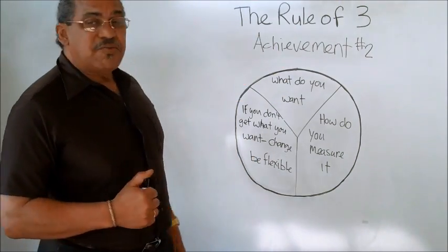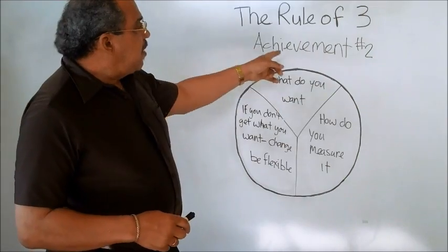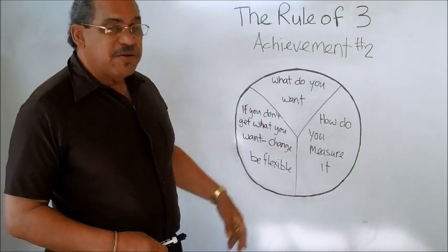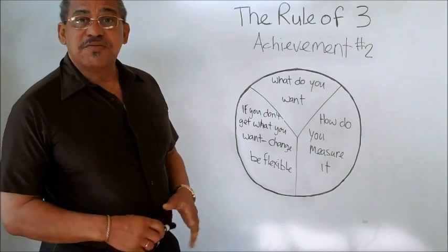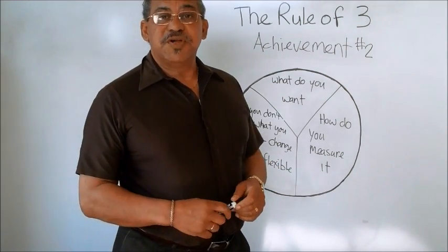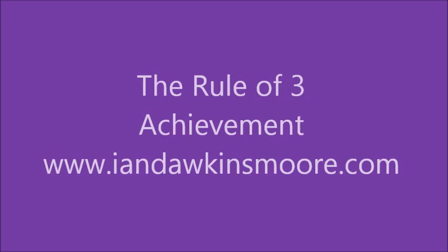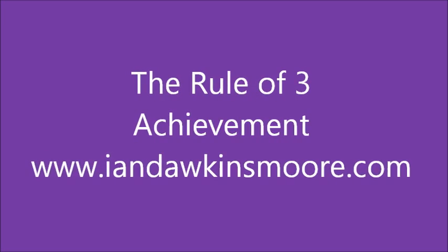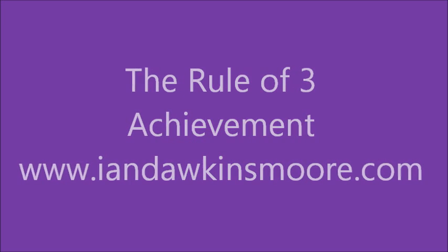So, again, second rule of three, achievement. Know what you want, know how to measure it, and if it doesn't work out, change. Be flexible. So this is Ian Moore. Until next time, be well. Thank you.